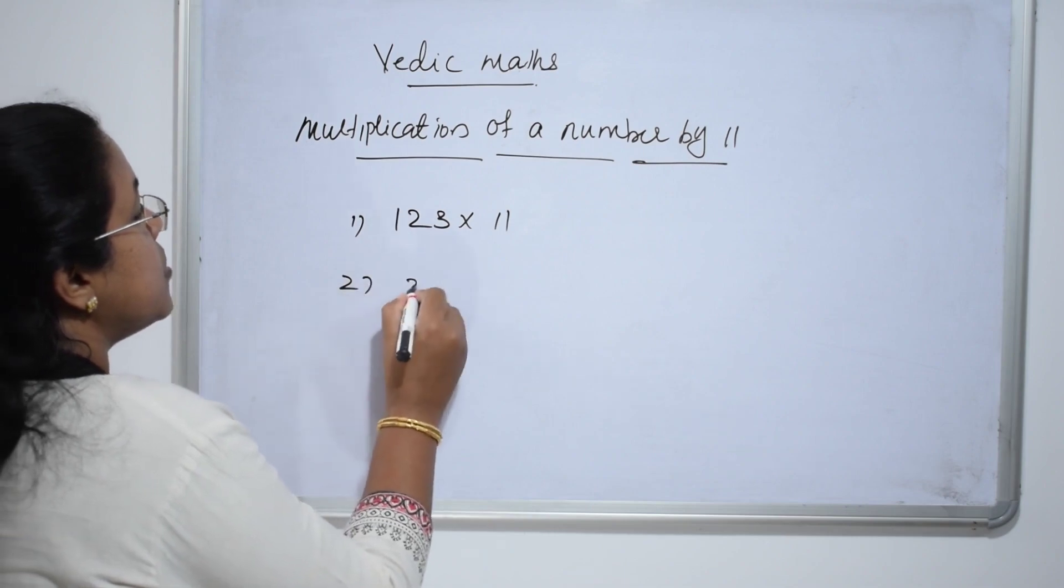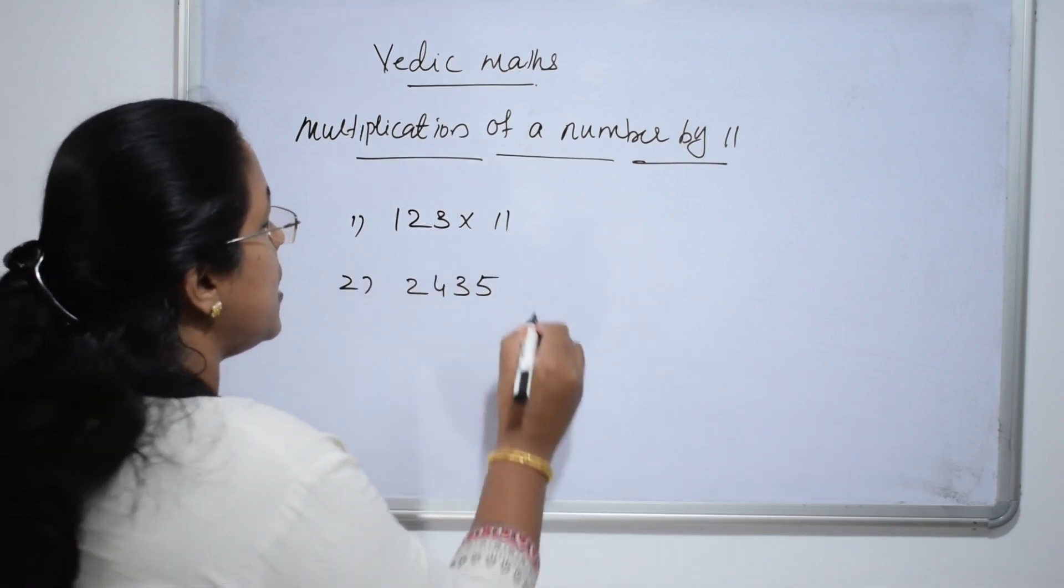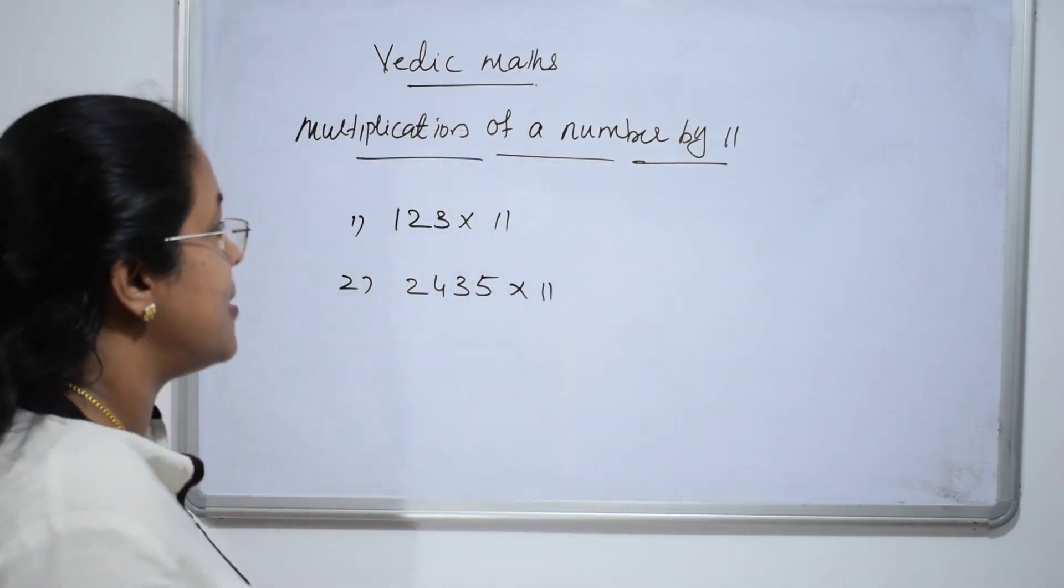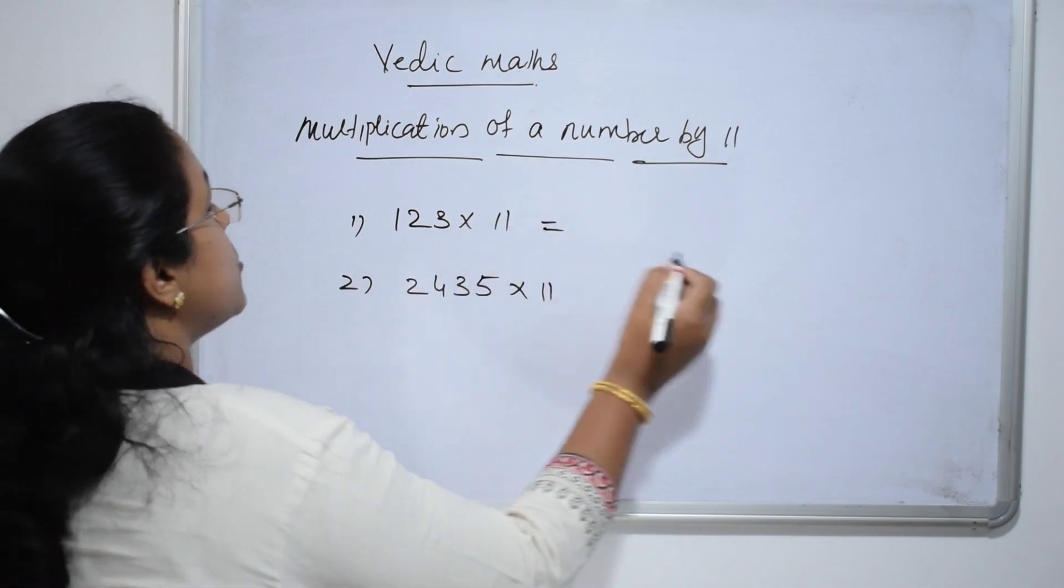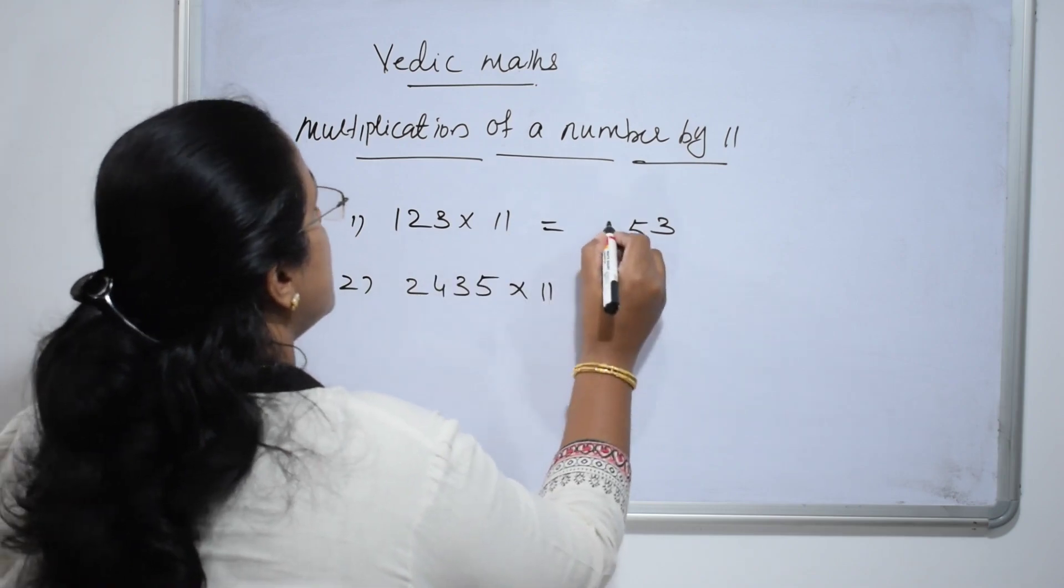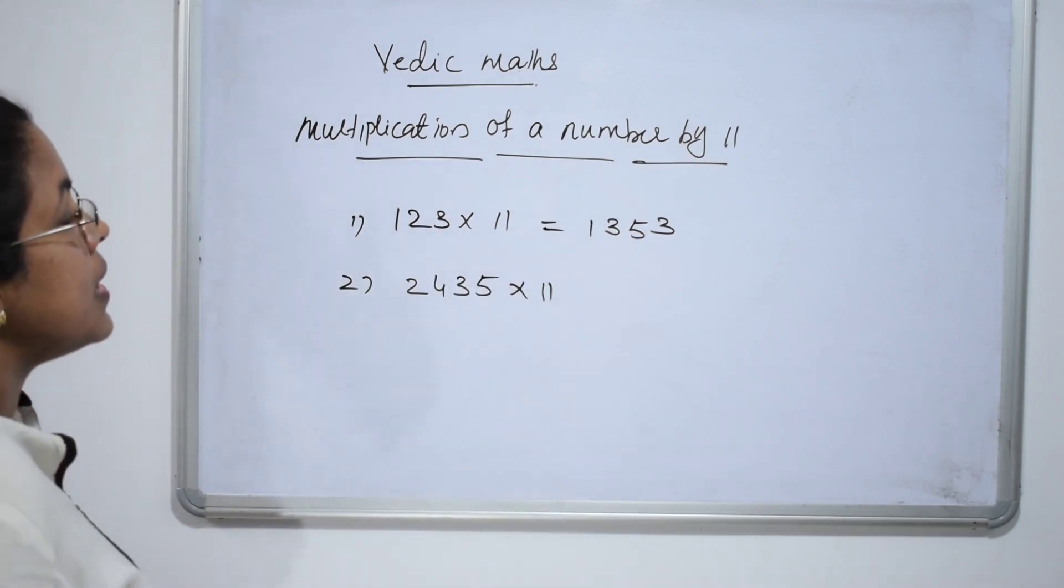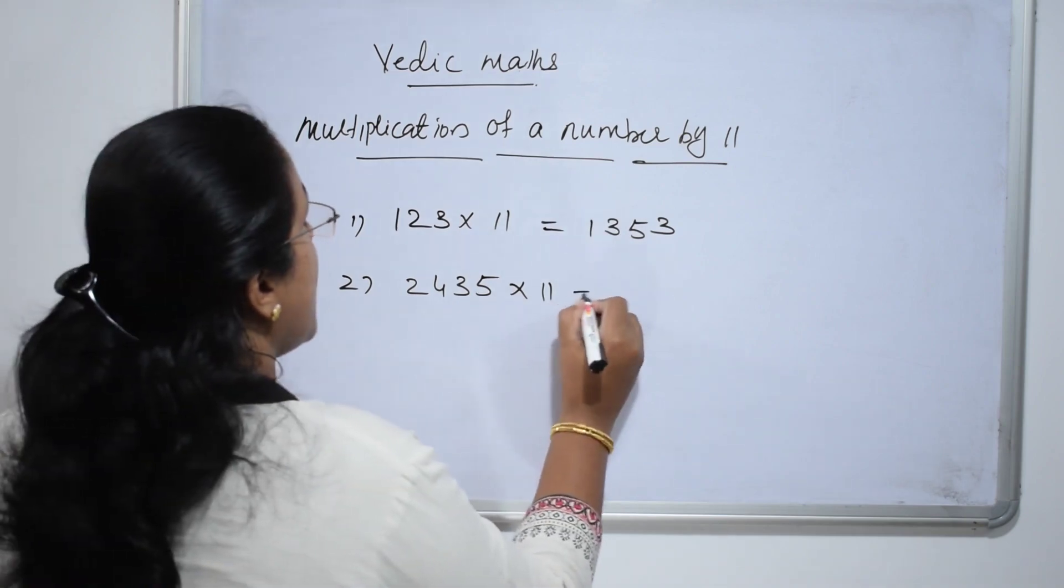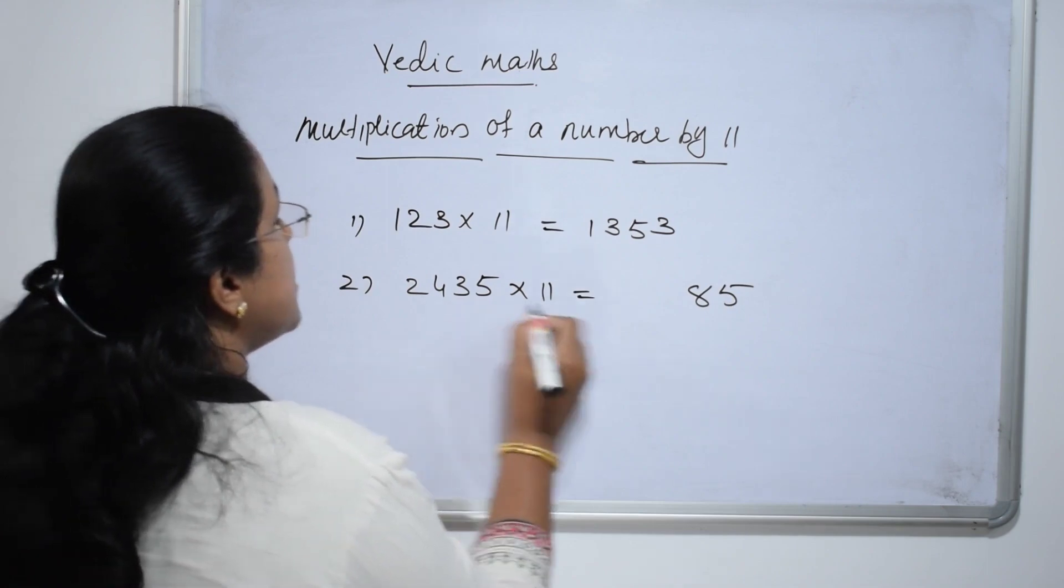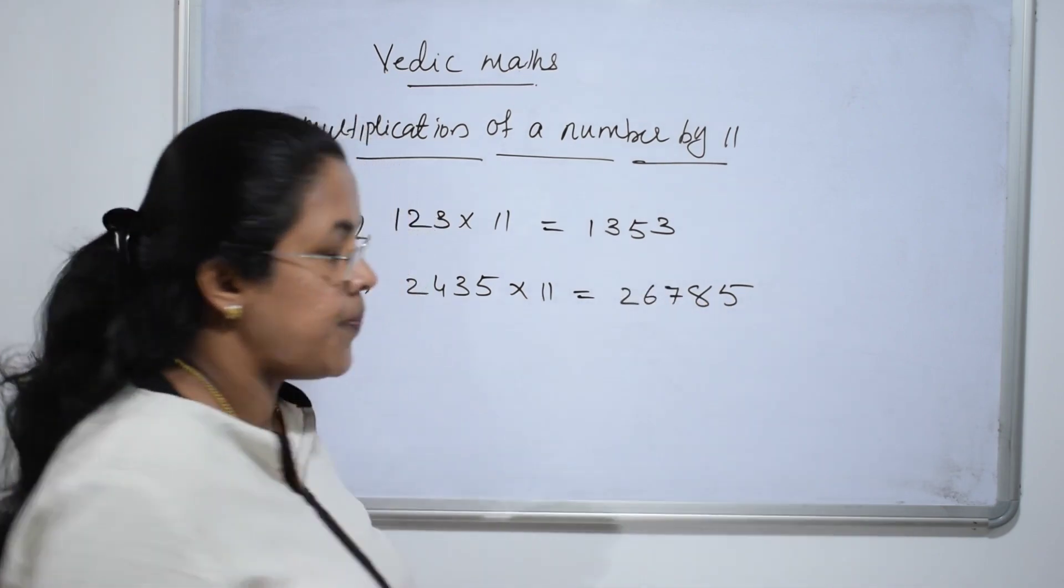One more question. 2435 into 11. We can calculate it like this. The answer to this question is 3531. Next, the answer to this is 55876. So, how is this possible?